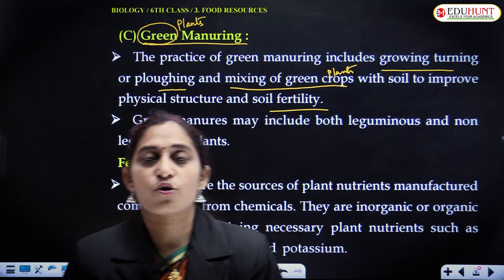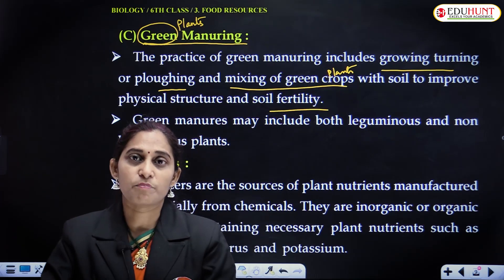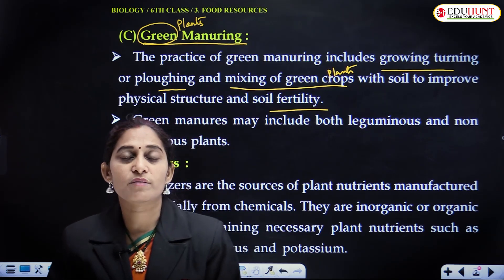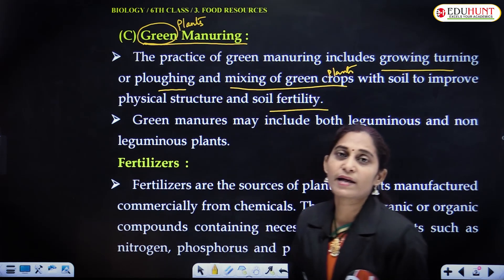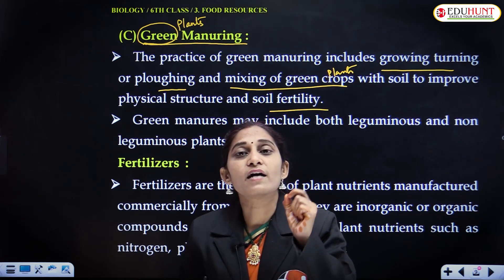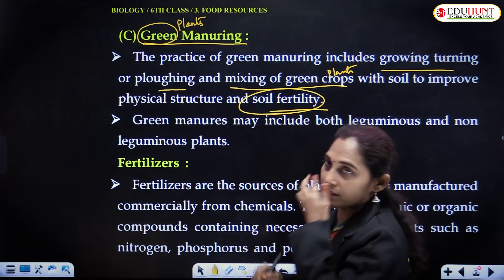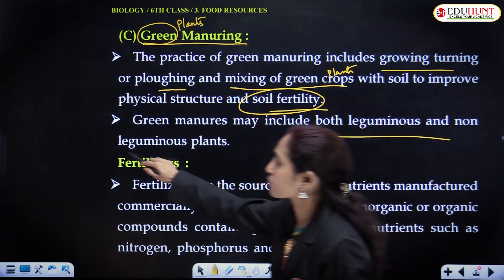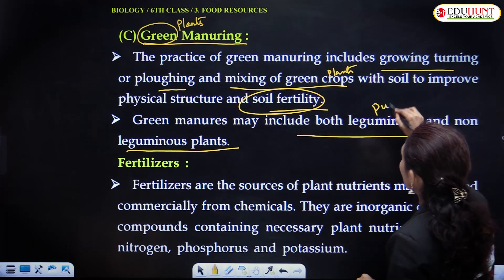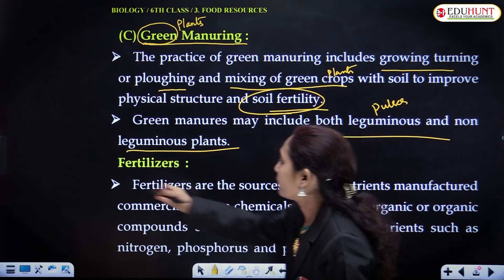Leguminous crops serve a dual purpose — they can be harvested and their remnants ploughed back to improve soil structure and fertility. Soil bacteria decompose the plant material, and nitrogen-rich substances are added to the soil, which is why soil fertility increases. Green manures may include both leguminous as well as non-leguminous crops. Leguminous plants are mostly pulses, and non-pulses also add fertility to the soil.